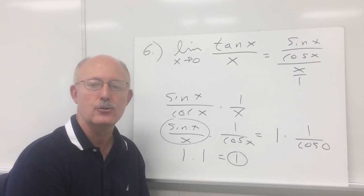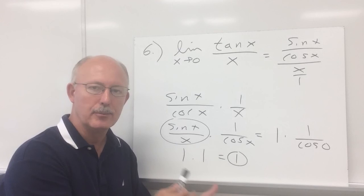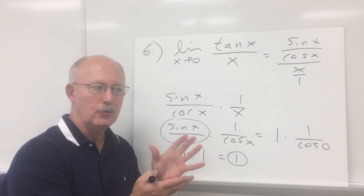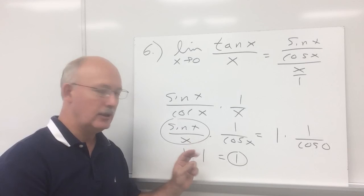When we get to our homework, there are several of these trig problems and you need to know what to watch for. In review, remember your two special trig limits: the limit as x approaches 0 of sin x over x is 1, and the limit as x approaches 0 of 1 minus cosine x over x is 0. That concludes our video for today. Bye.